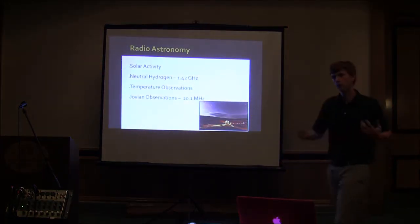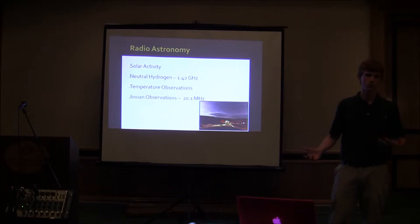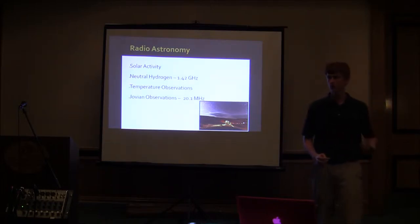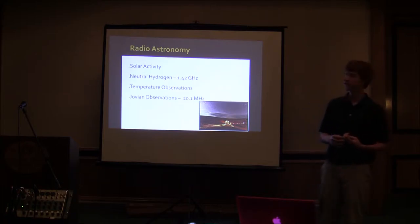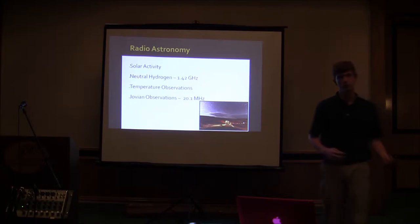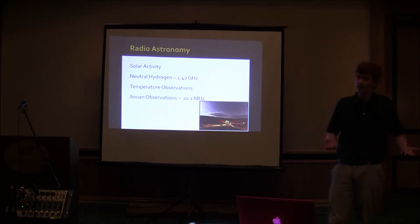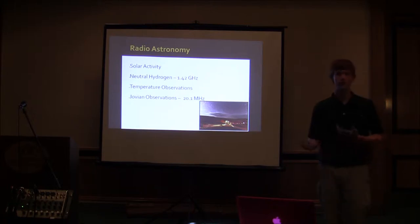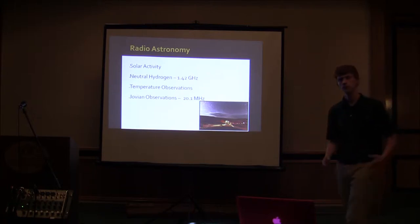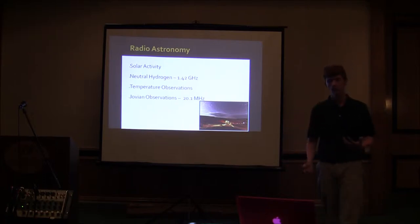Radio astronomy — just a general overview for those that don't know. It has four main things you would observe: solar observation, solar activity such as coronal mass ejections and sunspots — that's a very wide band. There's also more selective bands, such as neutral hydrogen at the 1.42 gigahertz area, more supplemental to optical astronomy because you can't actually see hydrogen. Temperature observations involve black body radiation, also wide band. And then Jovian observations, which is what the RAM 2014 project was focused on, sitting at 20.1 megahertz.